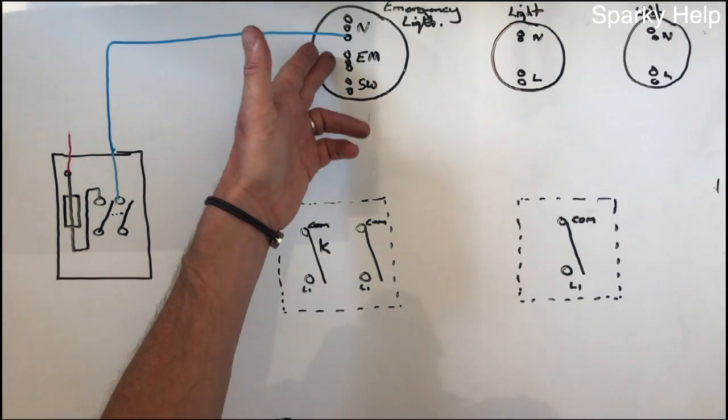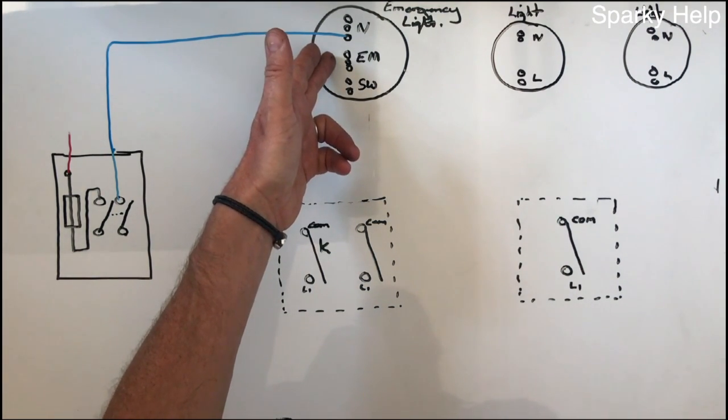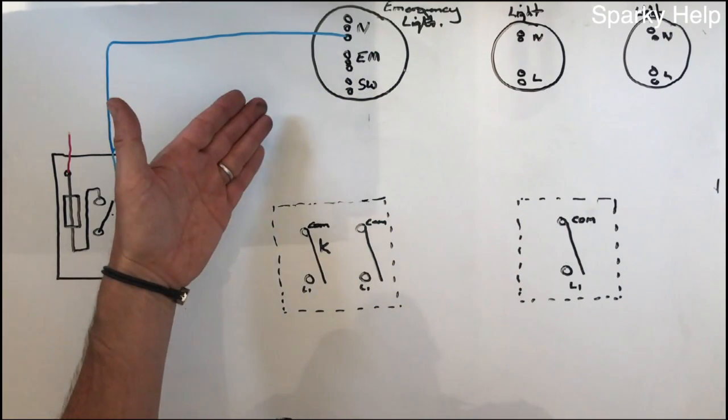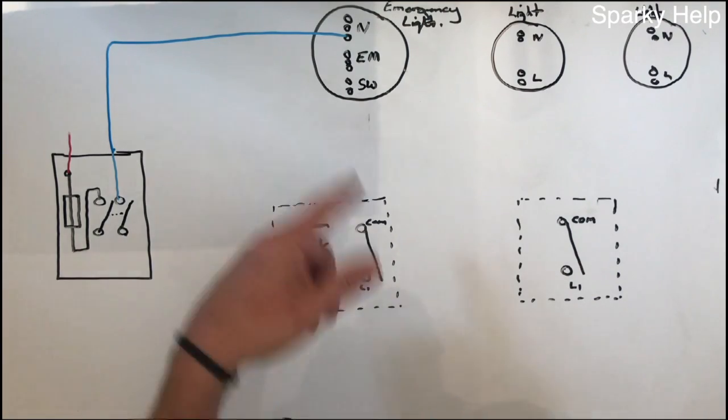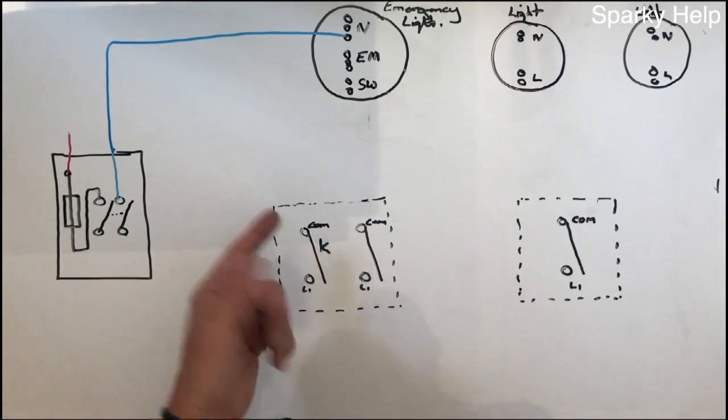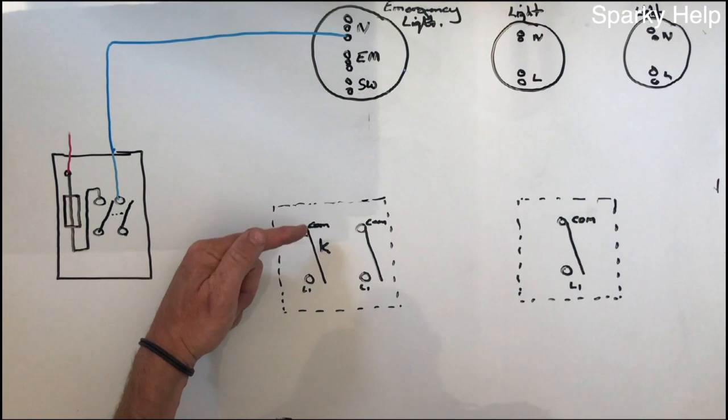But what we need is we need a point to test the emergency, and that needs to be local to it. So typically you'd place that in a switch in the same room, and it would be a key switch, so it would be a key operated switch, but it's still a one-way switch, or a two-way switch, whatever it wishes to be.